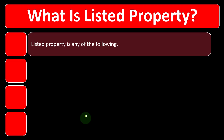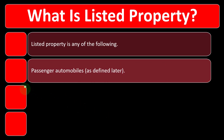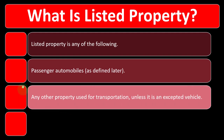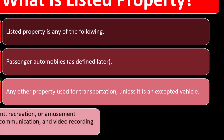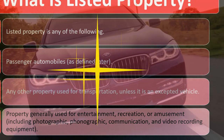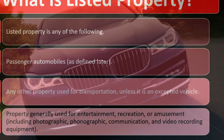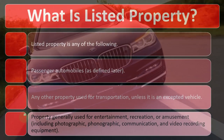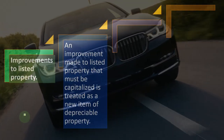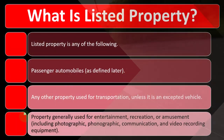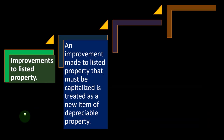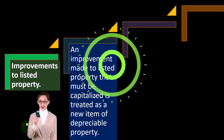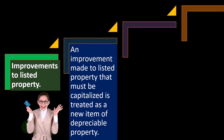So, what is listed property? Listed property is any of the following: passenger automobiles (defined later), any other property used for transportation unless it is an excepted vehicle, and property generally used for entertainment, recreation, or amusement, including photographic, phonographic, communication, and video recording equipment. You can imagine certain industries are more likely to be using some of these items, and there are questions around business versus personal use, which gets more difficult when dealing in a business that seems more recreational in nature.